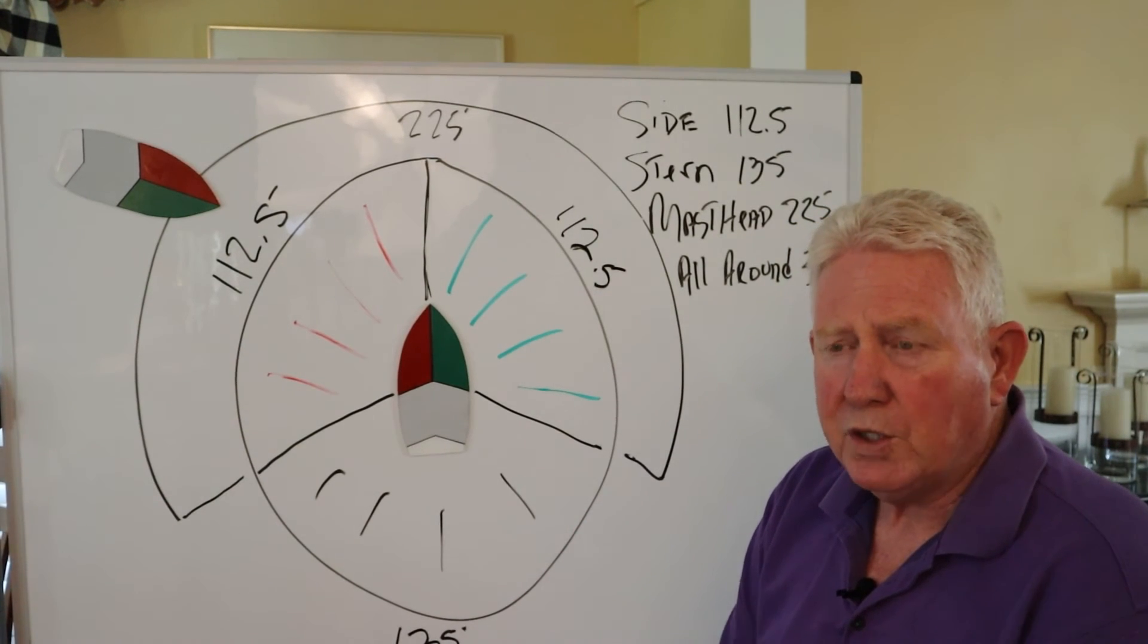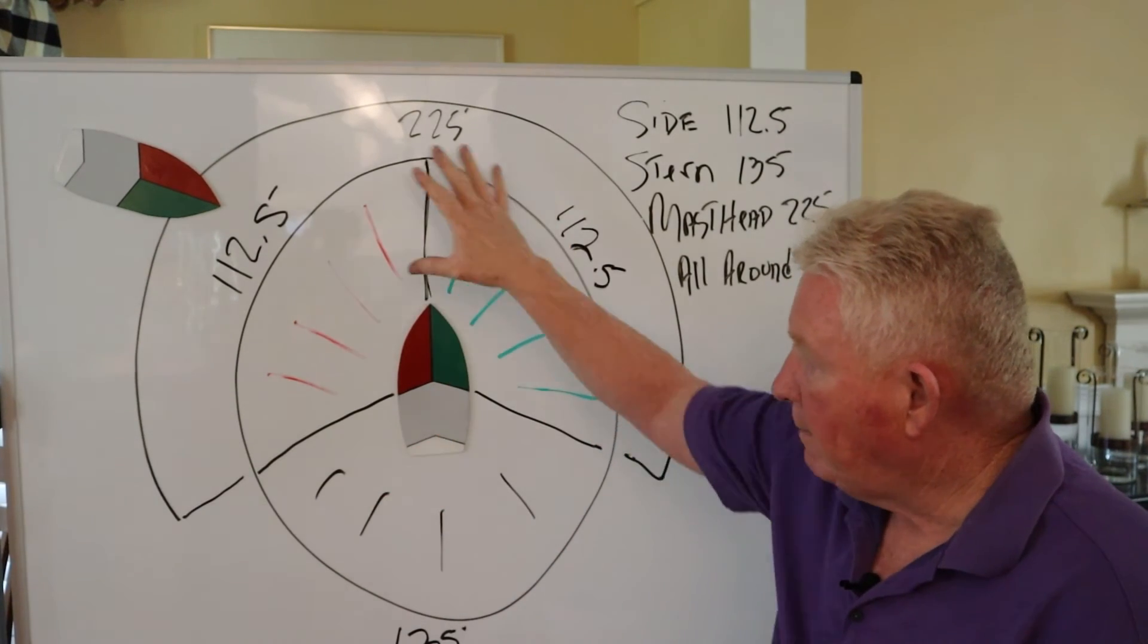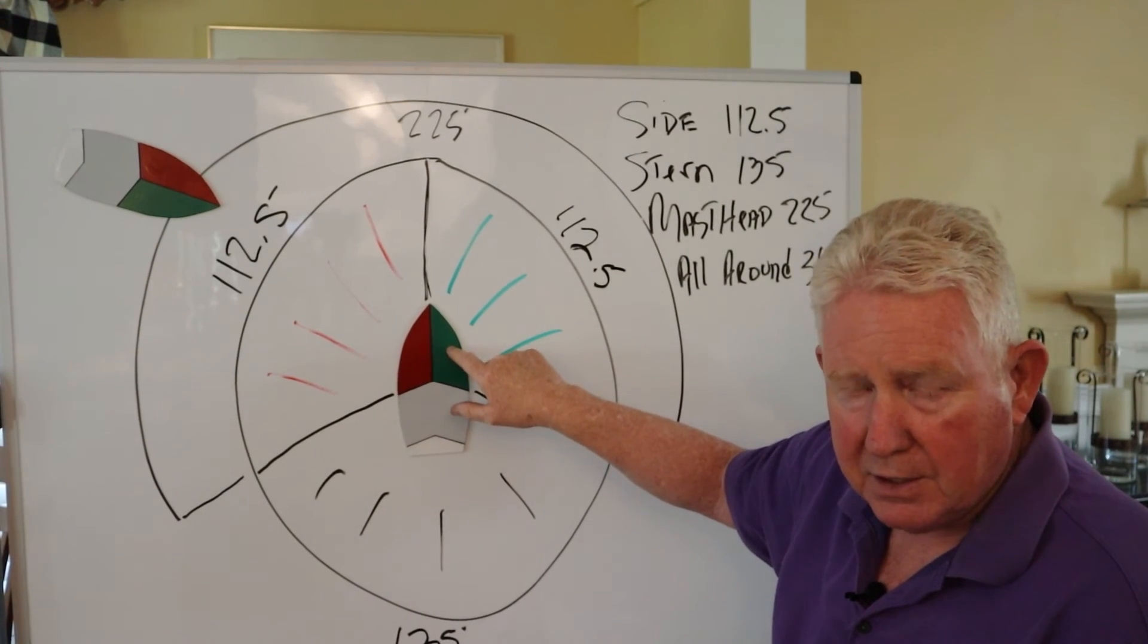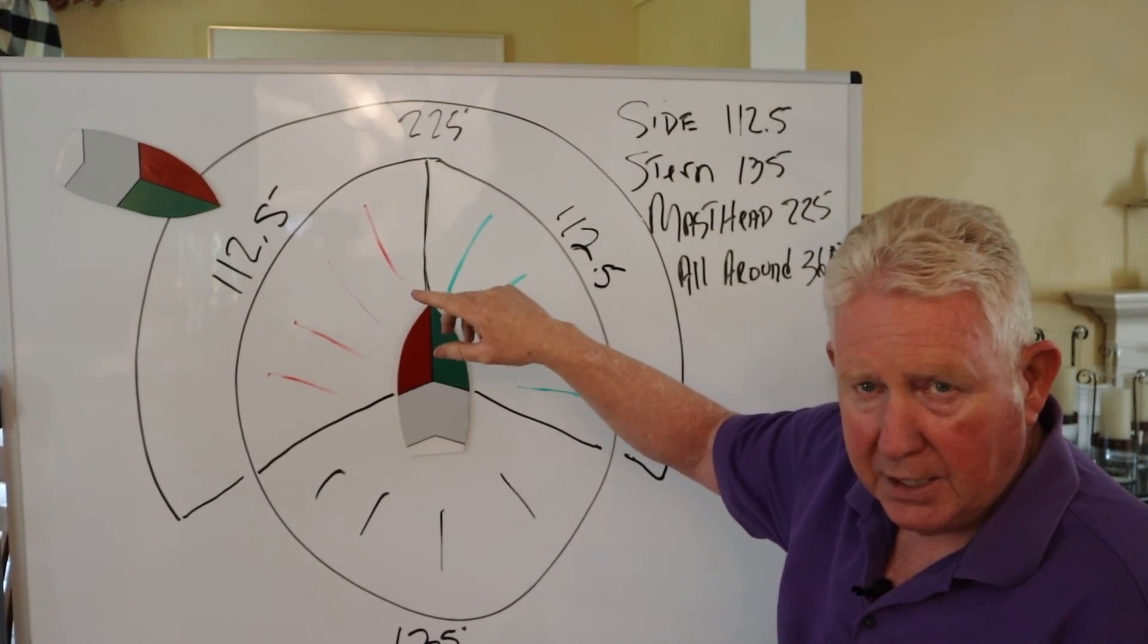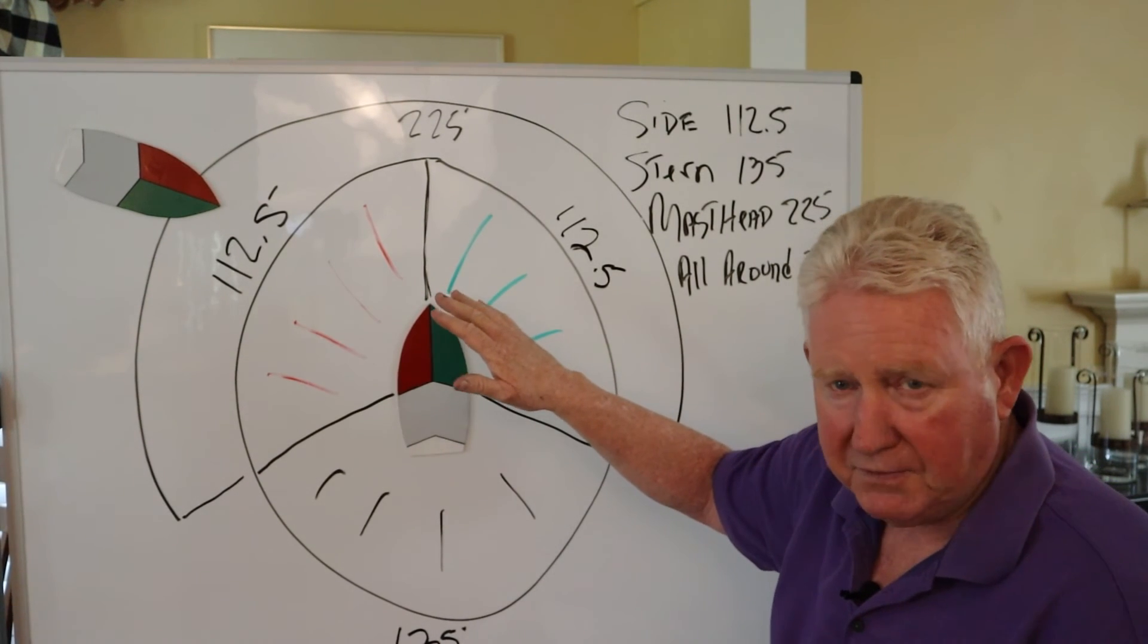If I haven't gotten too confusing here, you know that when you see, if you're up in here anywhere and you see side lights and you see a white masthead light, that this boat is less than 150 feet or less than 50 meters.